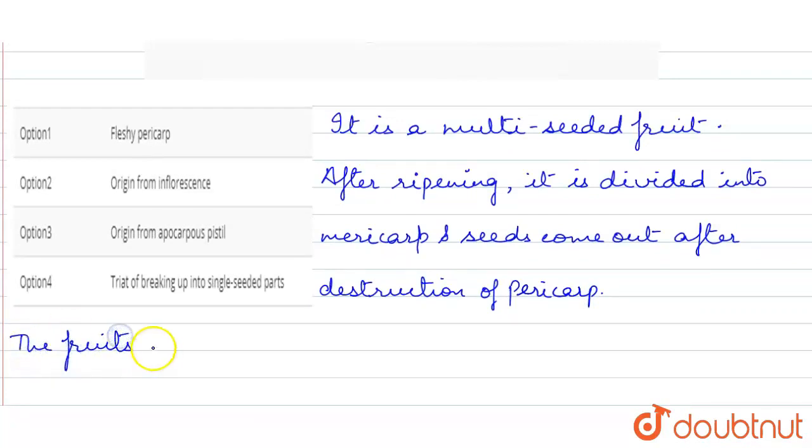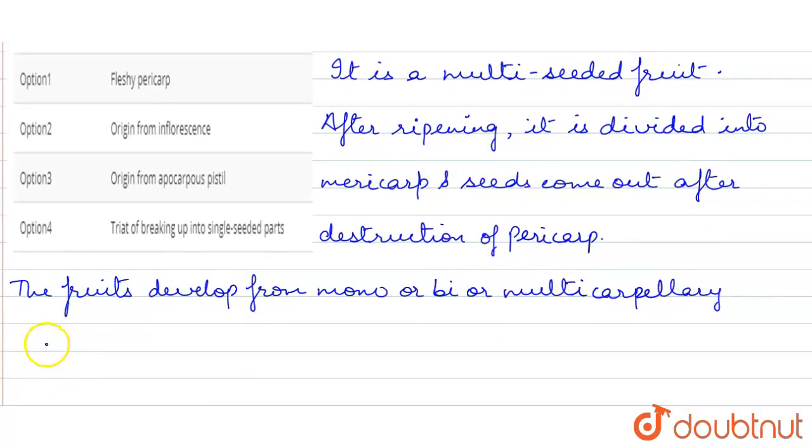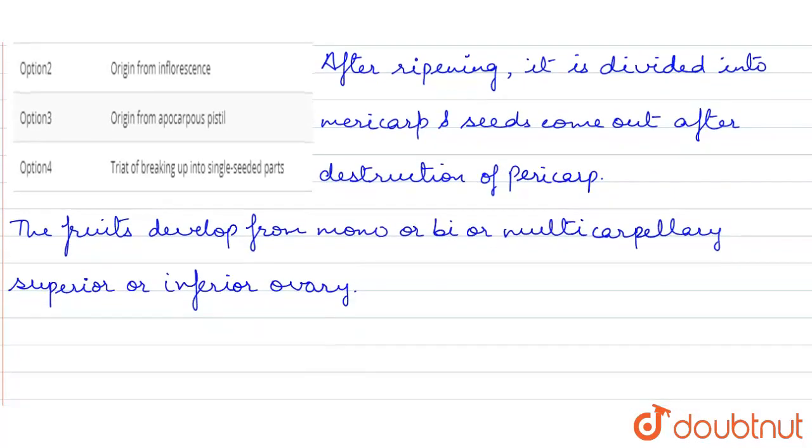Now, the fruits develop from mono, bi, or multi-carpellary superior or inferior ovary. Fruits develop from mono, bi, or multi-carpellary ovary in superior or inferior position.